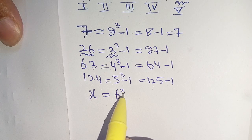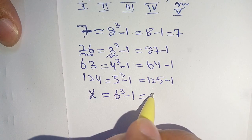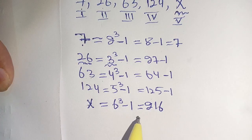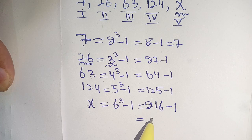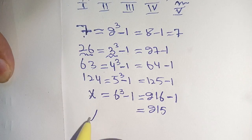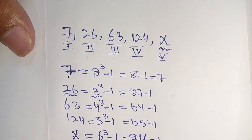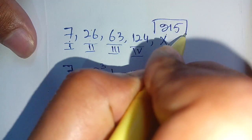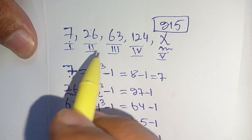We know that 6 cubed equals 216, so 216 minus 1 equals 215, which is the value of x. Thus x equals 215, meaning 215 will replace x, and our fifth term is equal to 215 — that is the missing number in this series.